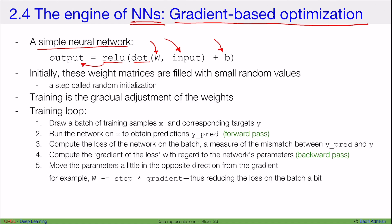Initially, these weight matrices, that is the values in this vector w, are filled with small random values, a step called random initialization. Training is a gradual adjustment of the weights, such that we keep updating the weight so that the output matches the actual output.